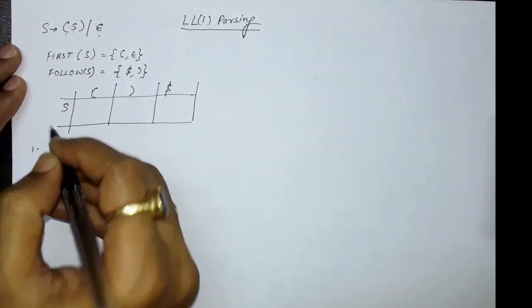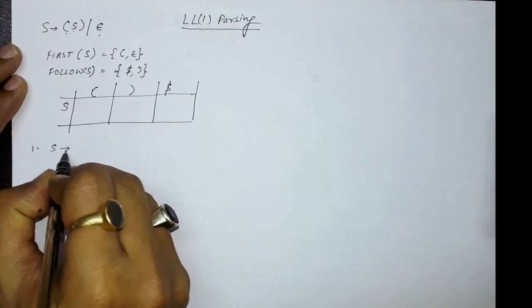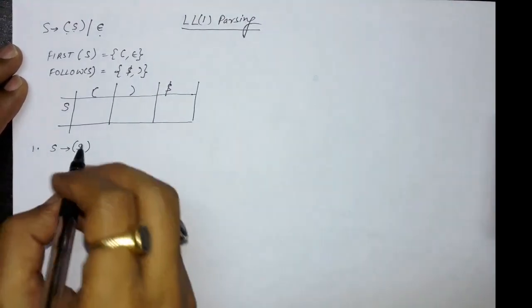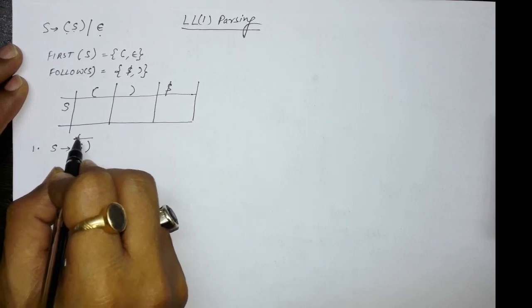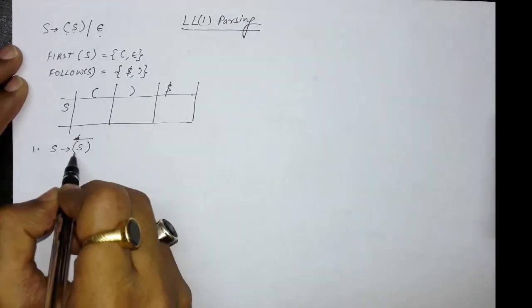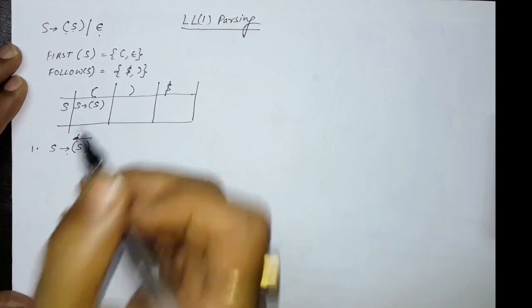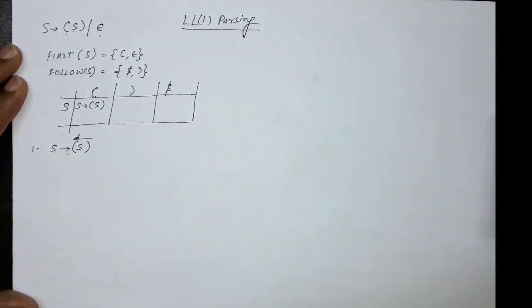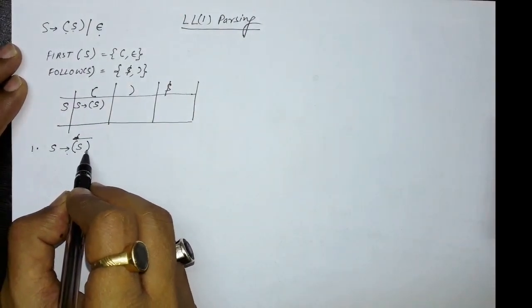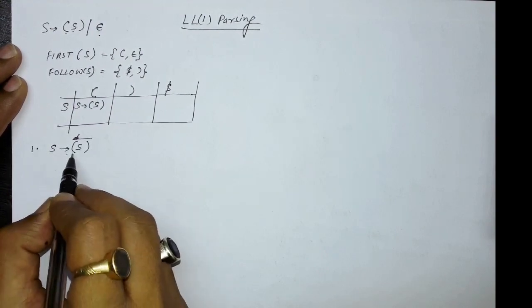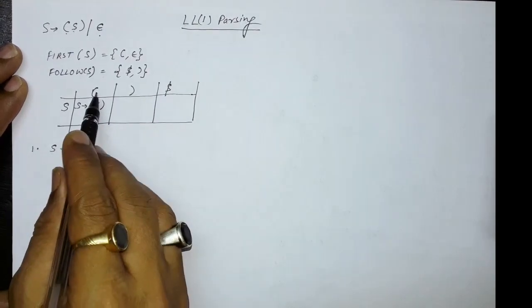For filling the entries in the table, there are certain rules. The first rule: for every production which does not contain epsilon, find the FIRST of the right-hand side. S produces opening bracket S closing bracket is the production without epsilon. FIRST of its right-hand side is opening bracket. So at the column for opening bracket, you write this production.